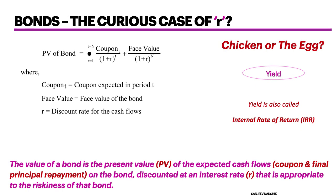Let's get started with the yield. Those of you who have seen episode 1 would already know we discussed about the present value of the bond and the formula used for deriving present value. Those of you who did not see the previous episode and may want to continue — just a bit of a refresher in the next one minute.